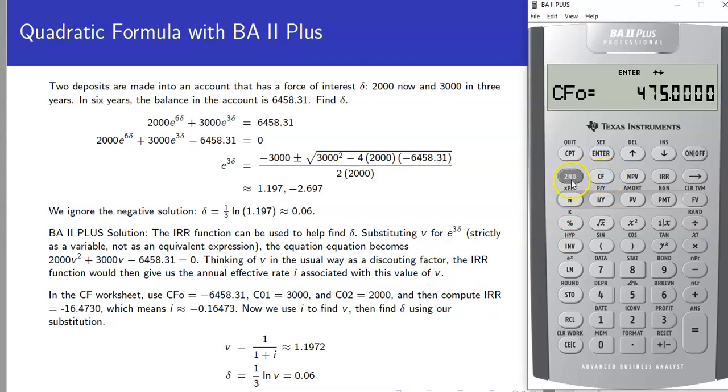Going to our cash flow worksheet, let's clear everything out. We've got an initial, looking at the way the equation is set up here, we've got an initial outlay of $6,458.31, make it negative. At time one, we see a $3,000 inflow, and then at time two we've got a $2,000 cash flow.